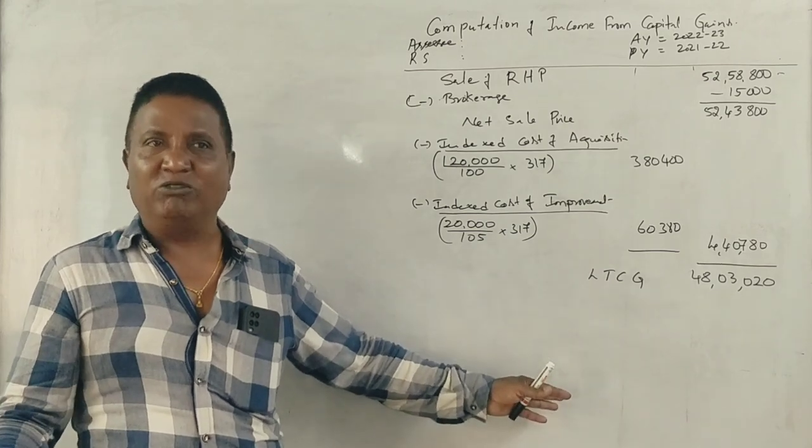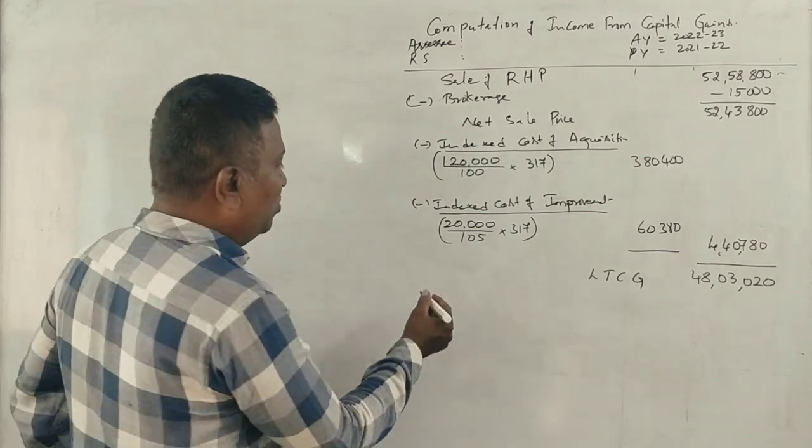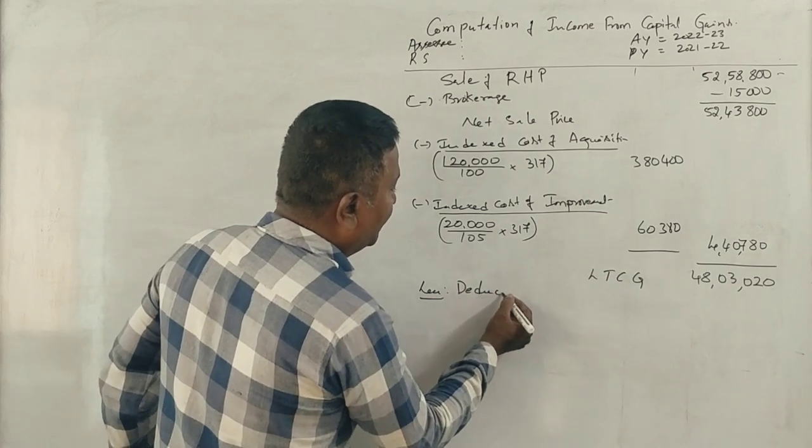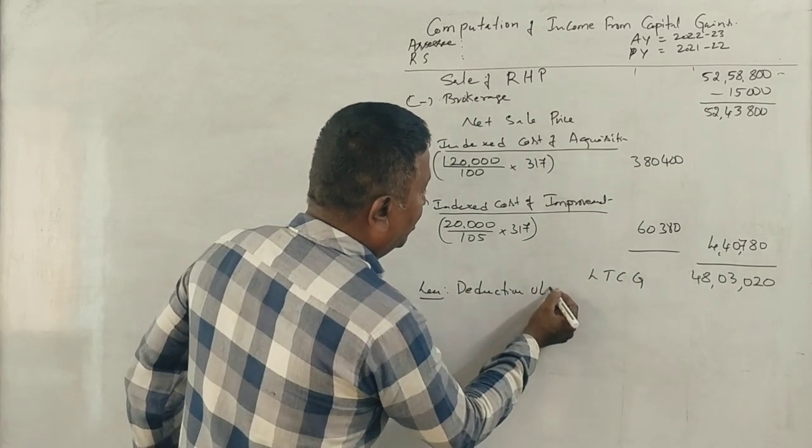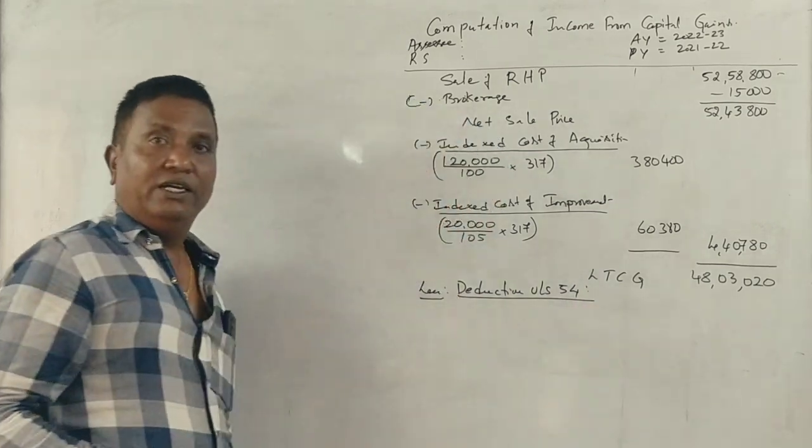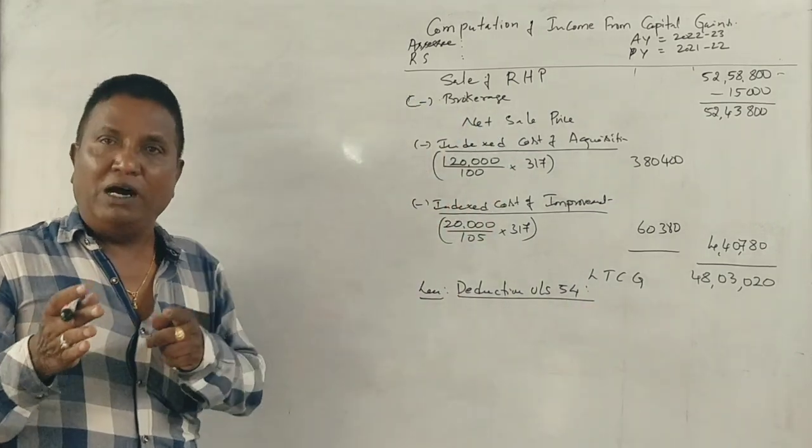We have a long term capital gain, and we have a deduction. That deduction is Section 54. In Section 54, you can purchase a residential house property.